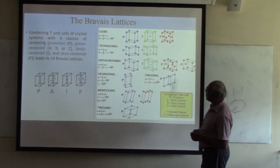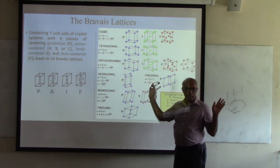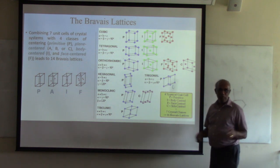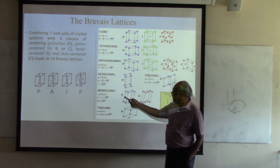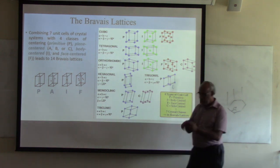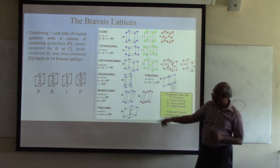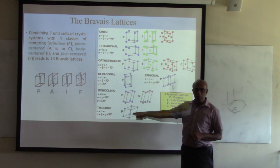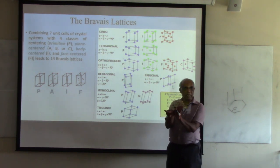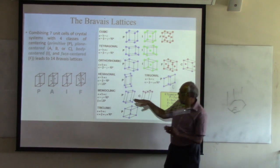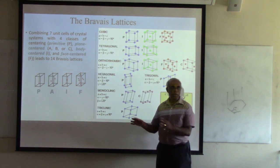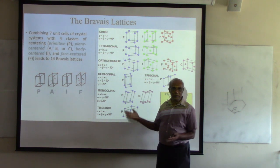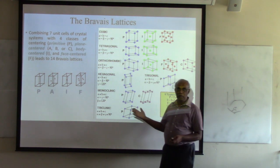When it goes to monoclinic, that's even less symmetry because all three lengths are different, and one angle is not even 120 — it can be an arbitrary angle. Then if you get to triclinic, everything is unequal.